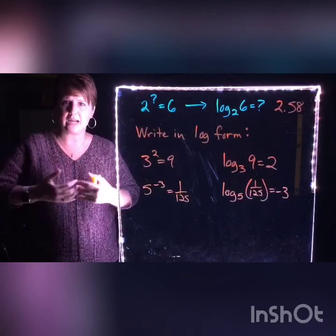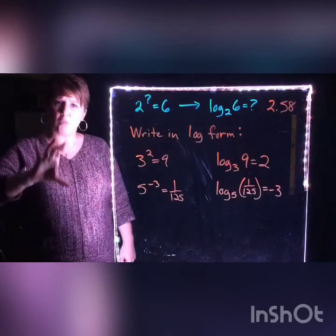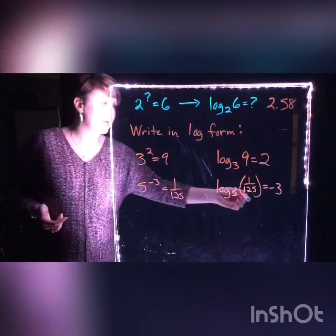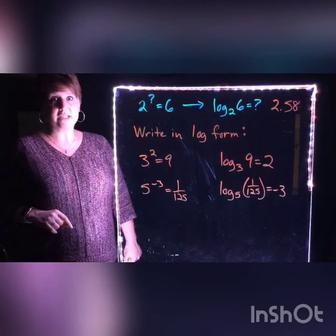I guess technically I would not have to use parentheses, but if I've got a jumbled mess of things I'm taking the log of, usually parentheses really helps with that. So log base 5 of (1/125) equals negative 3. LOGBAP: base, answer, power — base, answer, power every single time.